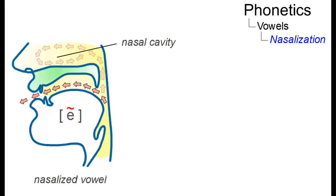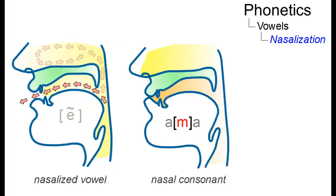Nasalized vowels must not be confused with nasal consonants. Such nasal consonants not only use the nasal cavity as a resonance chamber, but let the entire airstream escape through it.